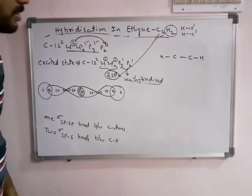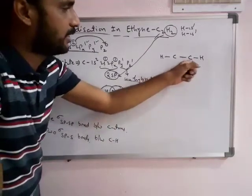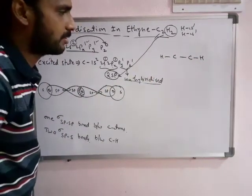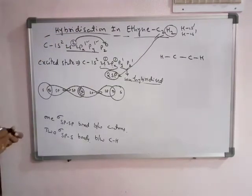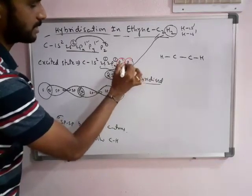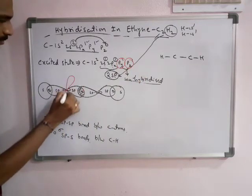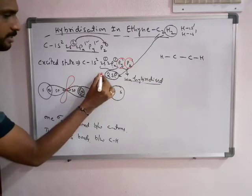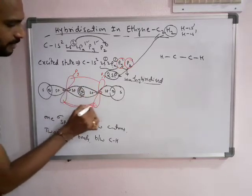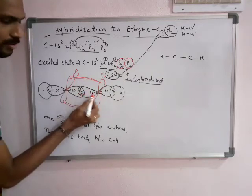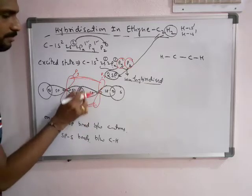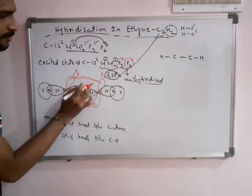We know that carbon must possess four bonds, but here each carbon is having only two bonds so far. So there must be two other bonds for each carbon. There are two unhybridized orbitals present in each carbon. The Py orbital of the first carbon and the Py of the second carbon undergo sidewise overlapping. After the formation of the sigma bond, there is no possibility of further head-on overlapping, so sidewise overlapping occurs, which forms a pi bond. There is formation of one pi bond between the two carbon atoms.